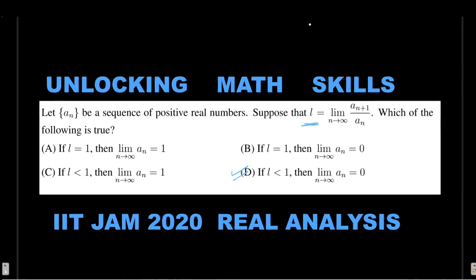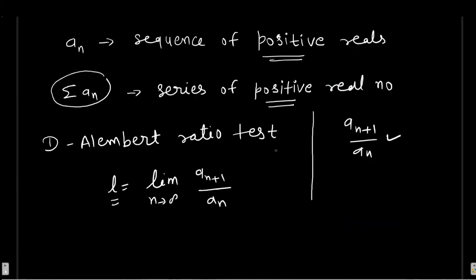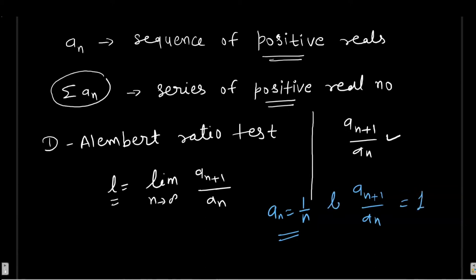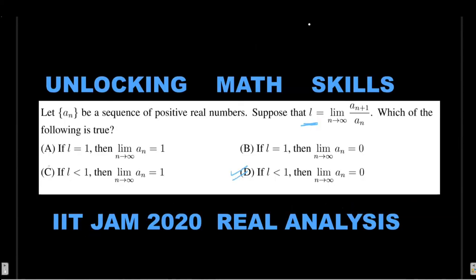You can easily eliminate options. If we look at option D, it says if l equals 1, then limit of a_n equals 0. This is wrong. Let's check option A - it says if l equals 1, then limit of a_n equals 1. Take a simple sequence where a_n equals 1. The limit as n tends to infinity is 1. So option A is wrong.